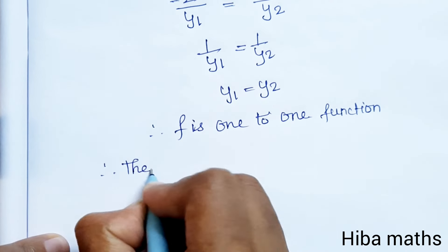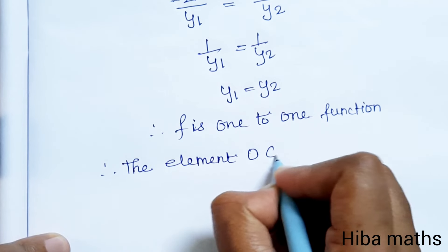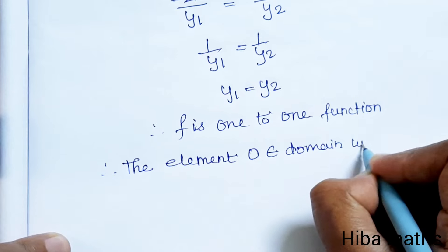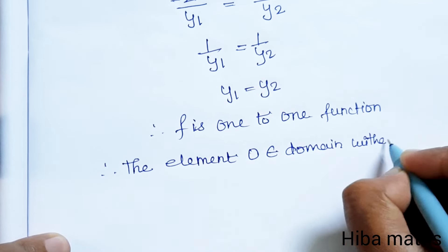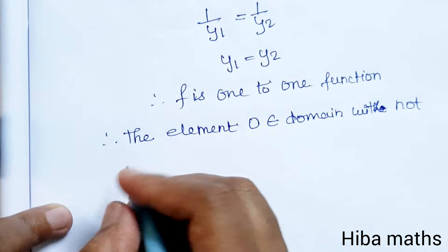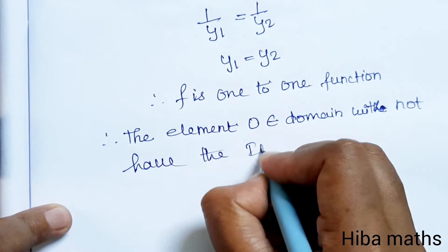Therefore, if the element 0 is in the domain, it will not have an image, since we cannot divide by 0. So 0 is not in the image, meaning 0 cannot be in the domain.